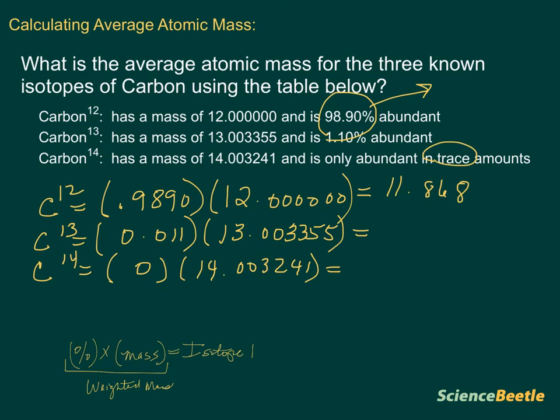If we do the second one here, we take the 0.011 and we multiply that by the 13.003355. We wind up getting for the second one 0.143036905.